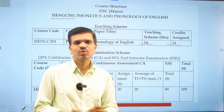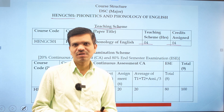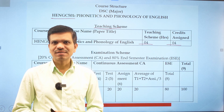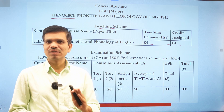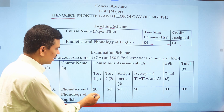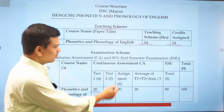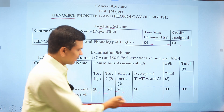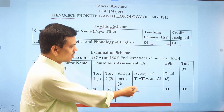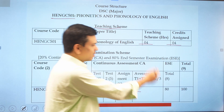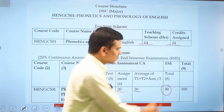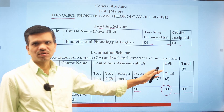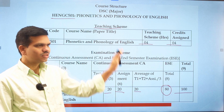In the examination scheme, you will see that it is split: 20 percent is given to continuous assessment and 80 percent is given to the end semester exam. In the 20 percent assessment there are two tests — Test 1 and Test 2 — and each test carries 20 marks. You also have to complete an assignment of 20 marks, and the aggregate 60 marks is converted into 20 marks.